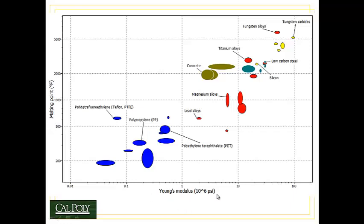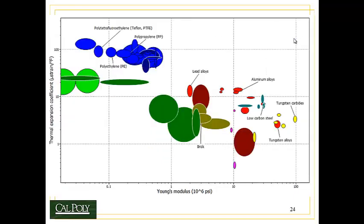If we plot the melting temperature of a material — which is a direct measure of the strength of its bonds — versus the Young's modulus, we see that as the bond strength increases, the Young's modulus also increases. Materials with low melting temperatures like polypropylene also have low Young's moduli, and materials like tungsten carbide, which have very high melting points, also have very high Young's modulus. So it makes sense that bond strength, which is directly related to the thermal property of melting point, is also directly related to the elastic property of Young's modulus.